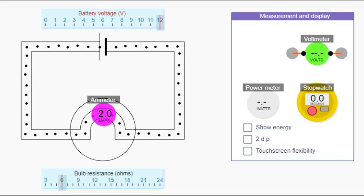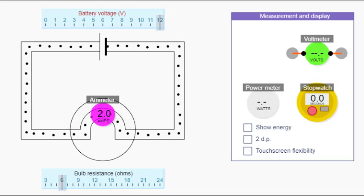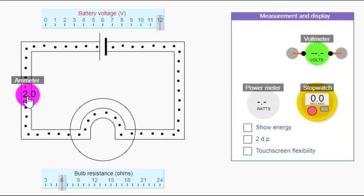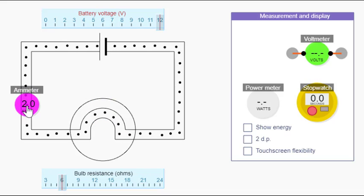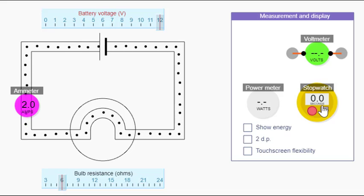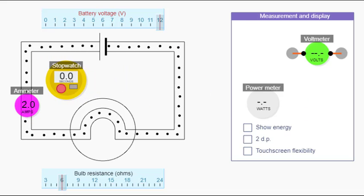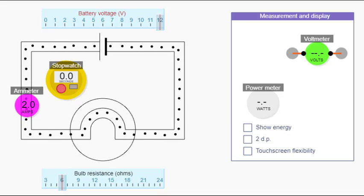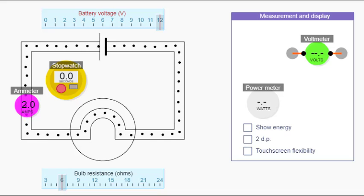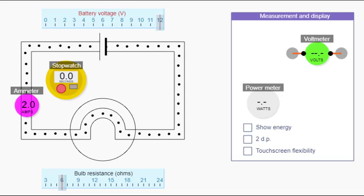Let's check by counting the charges. It's easier to count if we put the ammeter over here and the stopwatch next to it. I'm going to time five seconds and count the charges passing the top of the ammeter.